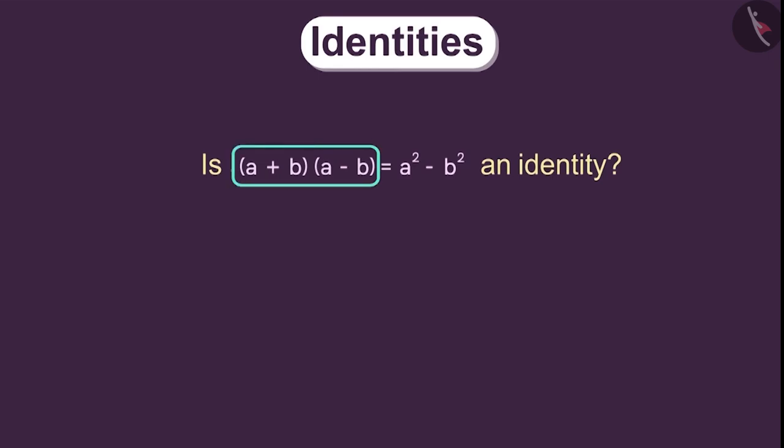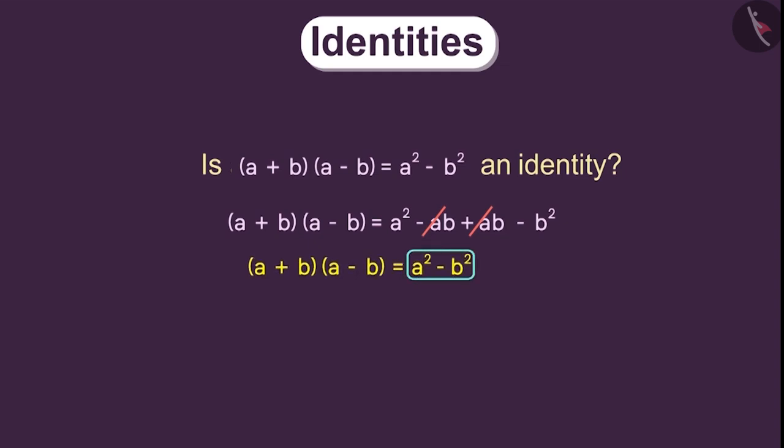Consider this expression. Let us simplify this by removing the brackets. It will be equal to this. Now, here since ab is same as ba, positive ab and negative ab will get cancelled. Therefore, we will get this. We can see that this is the expression on the right hand side. Therefore, this is an identity.